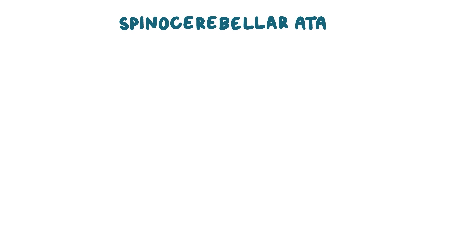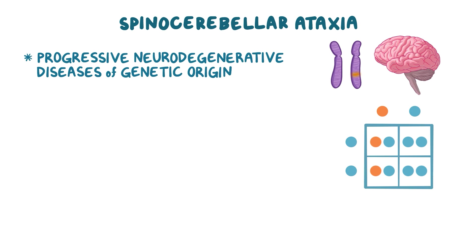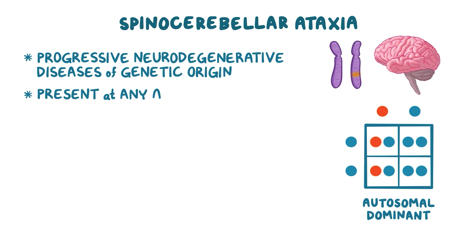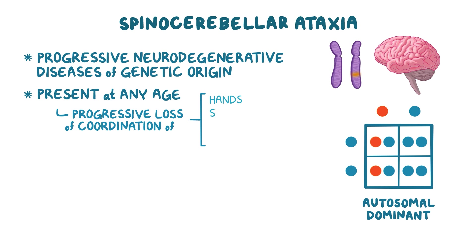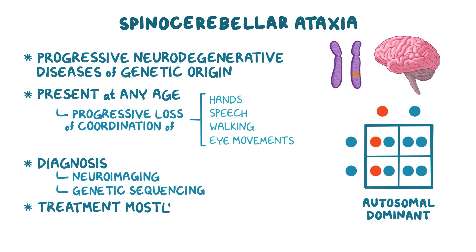Spinocerebellar ataxia is a group of progressive neurodegenerative diseases of genetic origin. Many different types have been identified, most of which are autosomal dominant. It can present at any age with progressive loss of coordination of hands, speech, walking, and eye movements. Diagnosis includes neuroimaging and genetic sequencing, and treatment is mostly supportive.